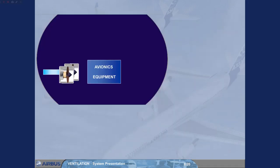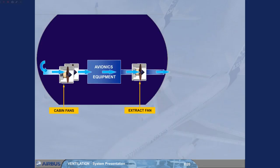Air blown by the two cabin fans to the avionics equipment is extracted by an extract fan. The extract fan operates continuously as long as the aircraft electrical system is supplied.